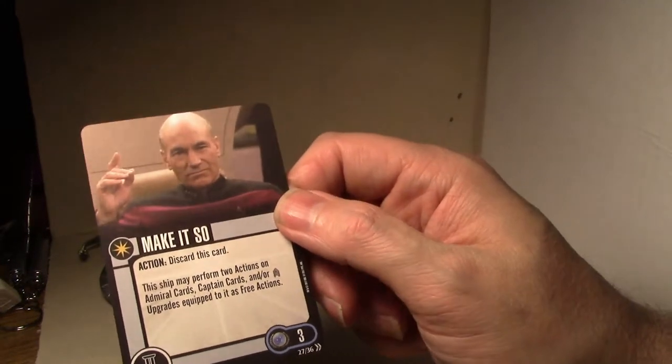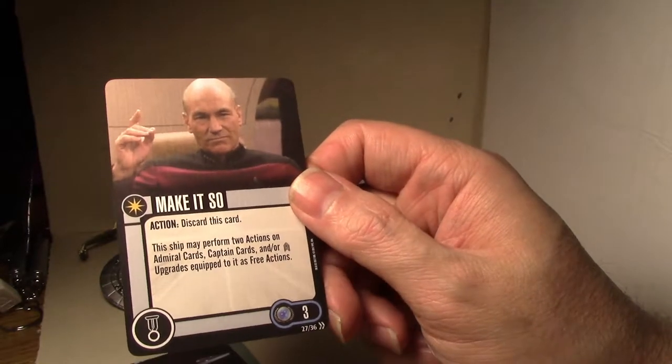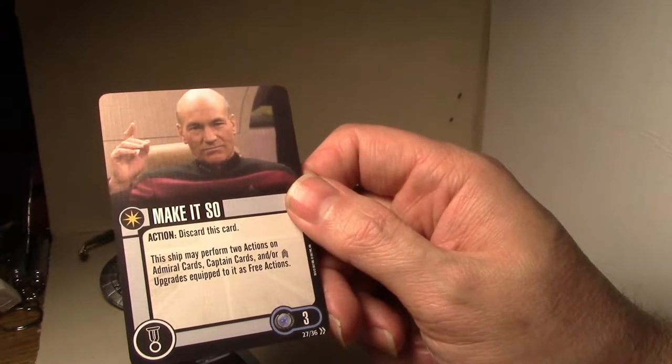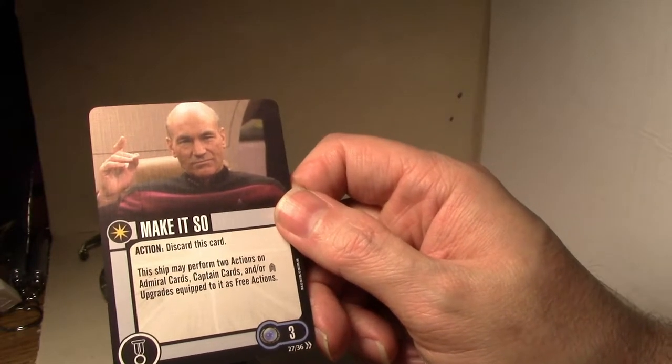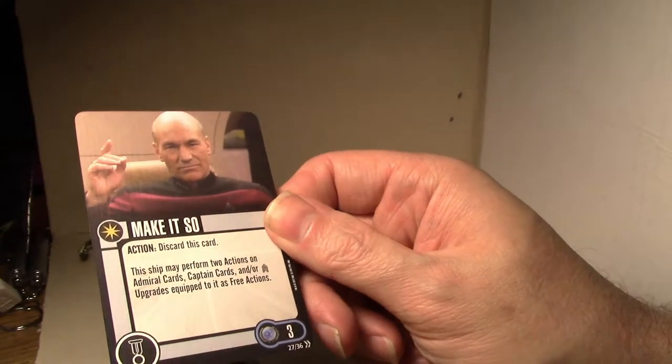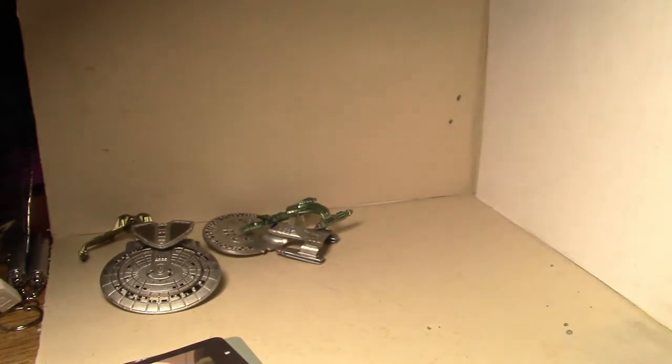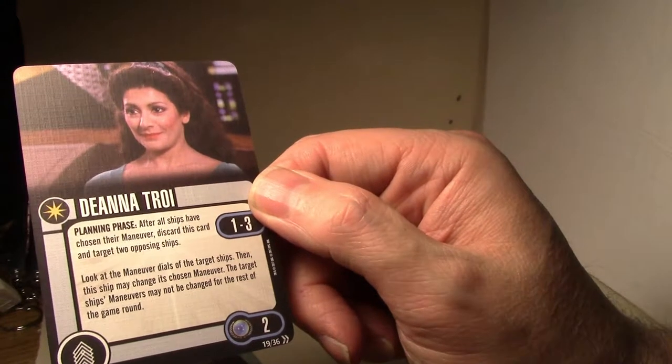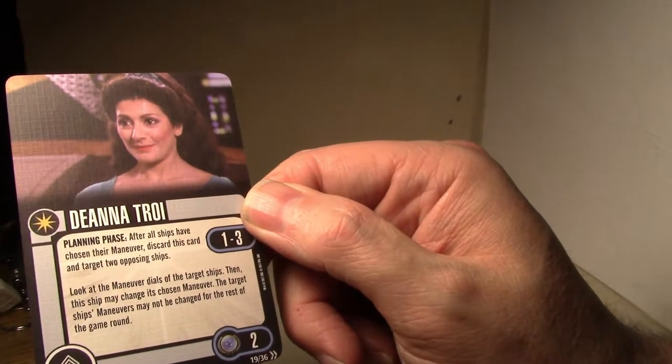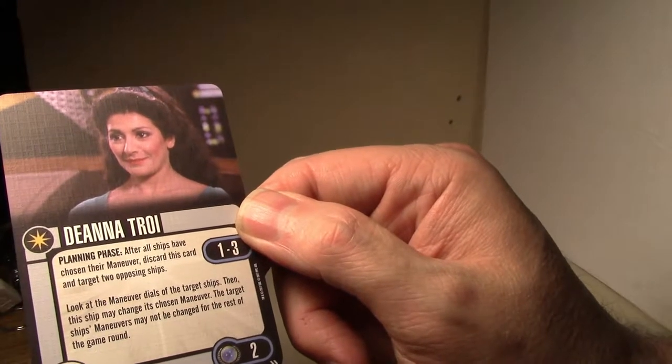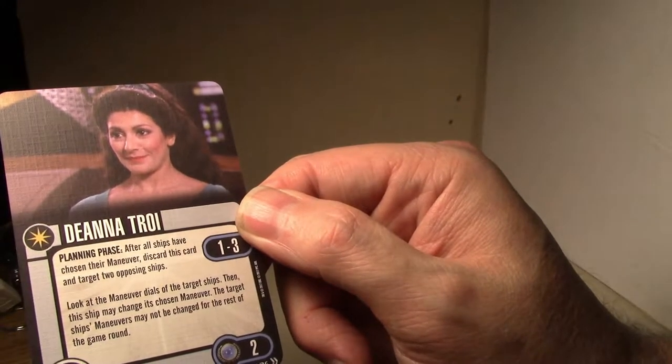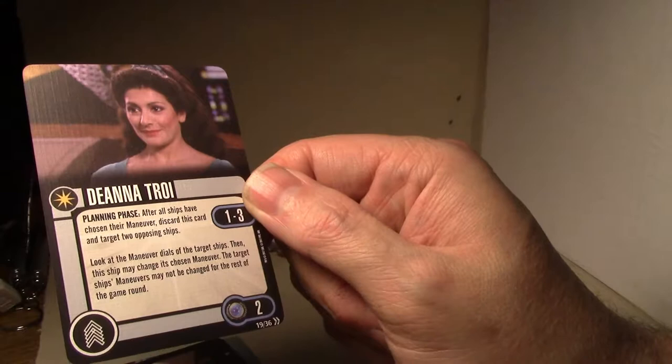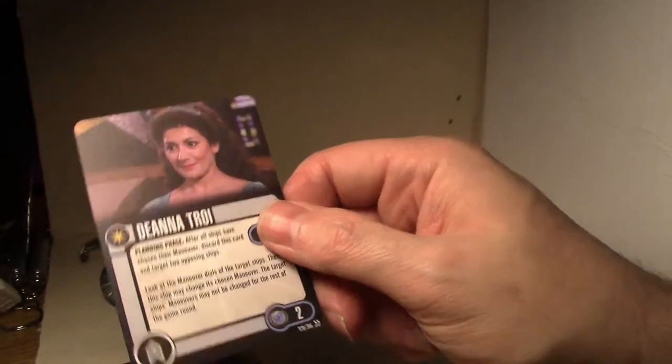Make it so, I'm going to try to not go too much in each individual card. This ship may perform two actions on admiral cards, captain cards, or crew upgrades equipped to it as free actions. So you get two for one once. I probably don't need to beat that at this card anyway. Ah, so let's see here. Deanna Troi, two points, planning phase, after all ships have chosen their maneuver, discard this card and target two opposing ships. Look at the maneuver dials of the target ships, then this ship may change its chosen maneuver. Target ship's maneuvers may not be changed for the rest of the game round. Two points, one shot. Ah, that's not too bad. That's actually quite useful. Quite useful. At the right time.